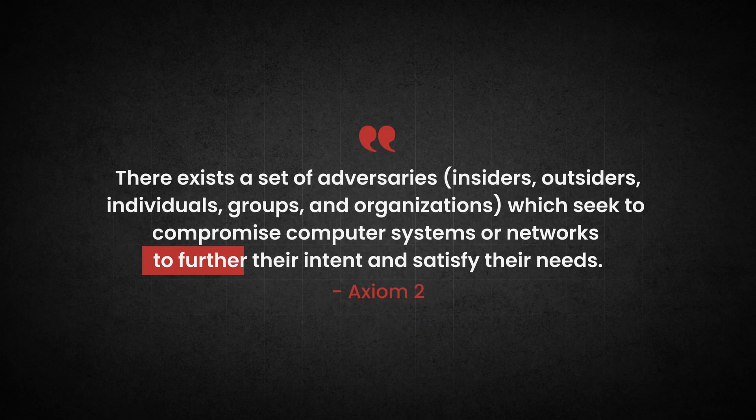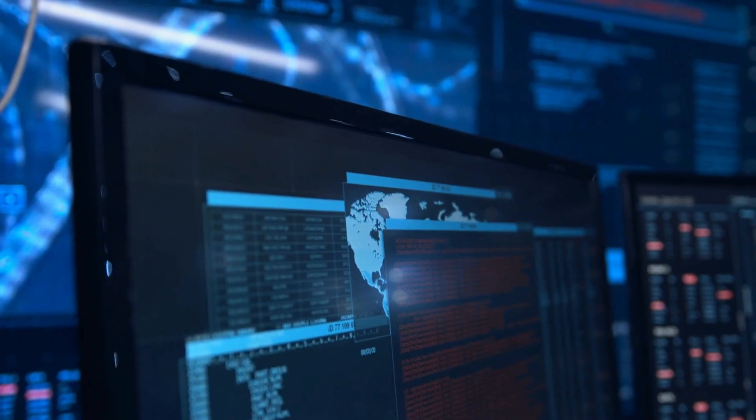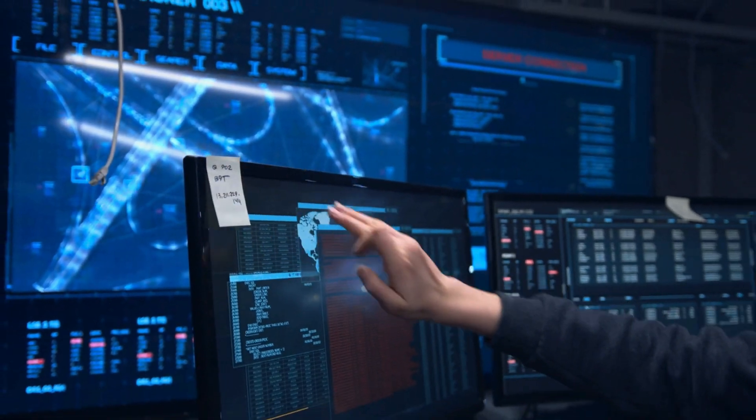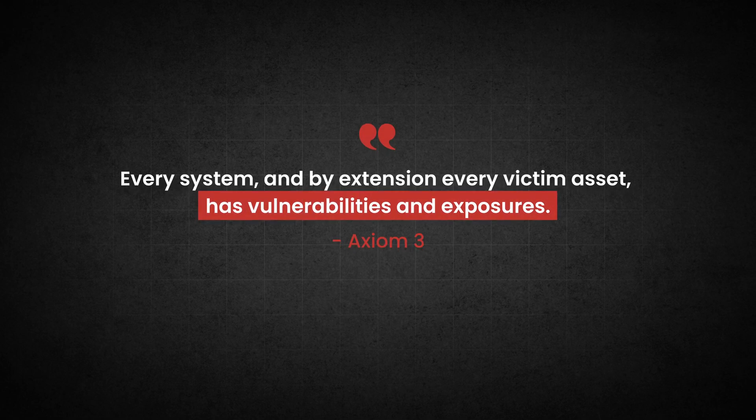Axiom 2 says there exists a set of adversaries — insiders, outsiders, individuals, groups, and organizations — which seek to compromise computer systems or networks to further their intent. There are always bad actors who want to access your data for financial, political, or personal gain. Axiom 3 states every system, and by extension every victim asset, has vulnerabilities and exposures. You should assume your systems will get breached at some point regardless of how expensive or up-to-date they are, and take precautionary actions to protect your critical assets even if they are.